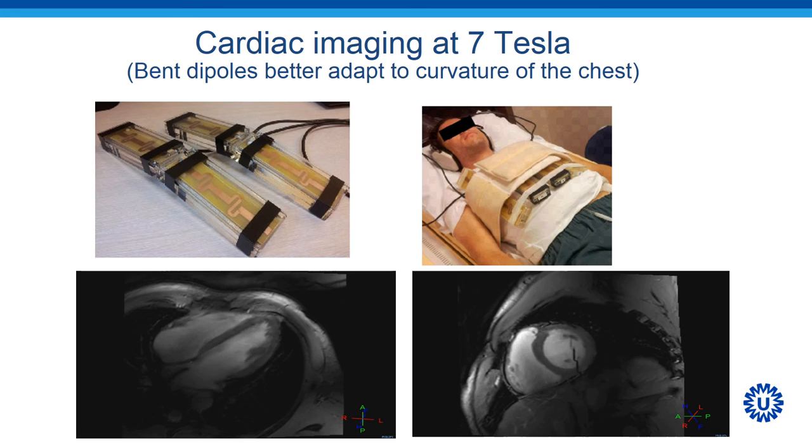We have also been performing cardiac imaging at 7 Tesla with these antennas. However, to adapt to the curvature of the chest, we had to develop bent dipoles to make it all happen. And still, you can see that the image quality is very good.